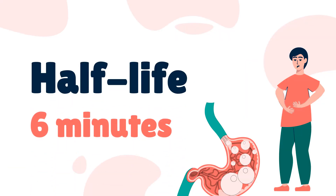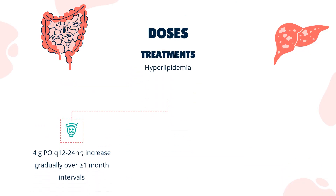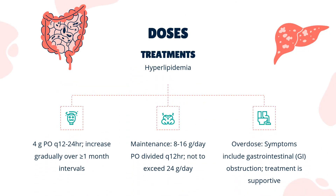Half-life: 6 minutes. Dose — Hyperlipidemia: 4g PO every 12–24 hours. Increase gradually over intervals of greater than or equal to one month. Maintenance: 8–16g per day PO divided every 12 hours, not to exceed 24g per day.